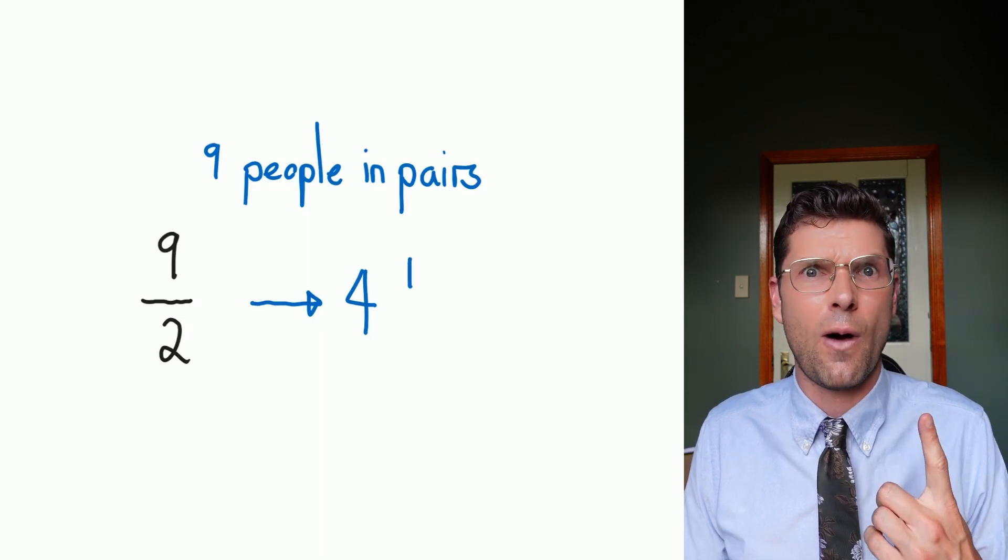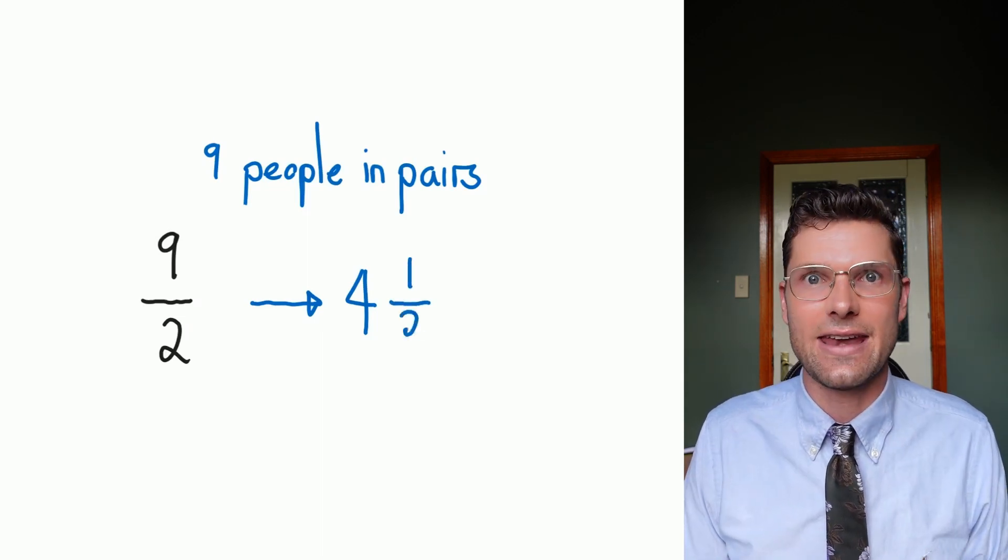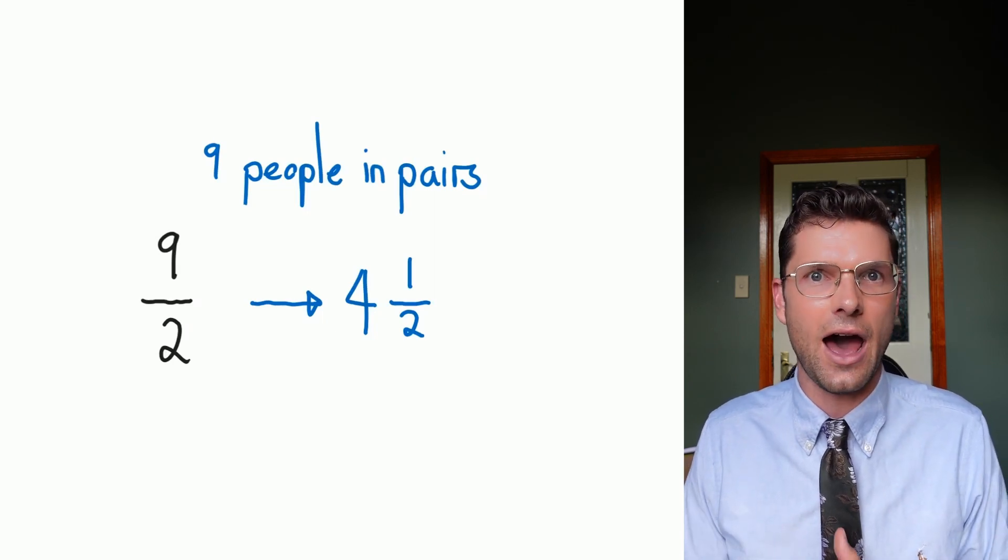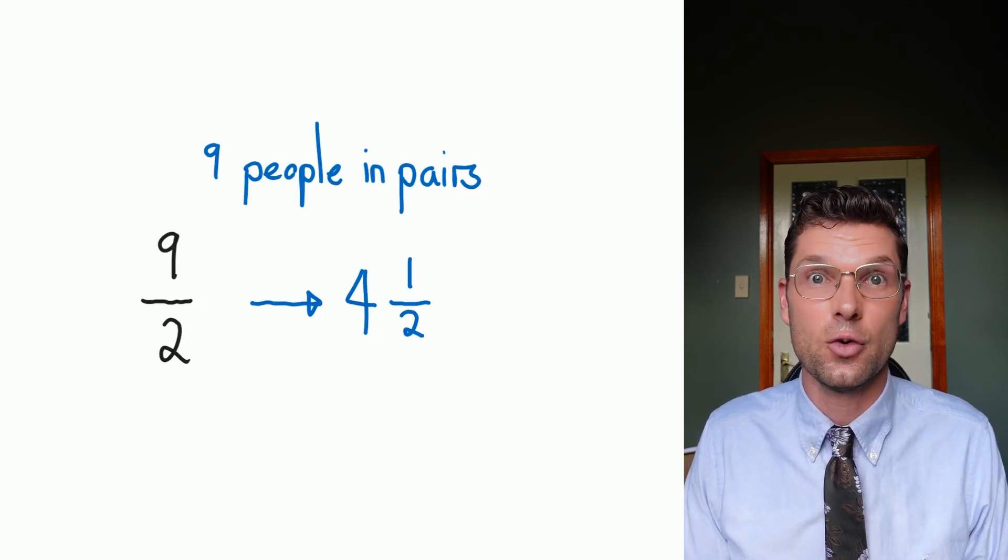Four full pairs, and I'll have one person left over, or half of that next team ready. So nine over two becomes four and a half. That's it. That's all we've gotta think about.